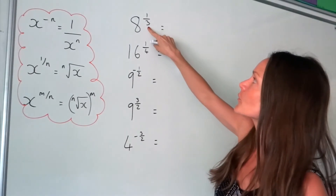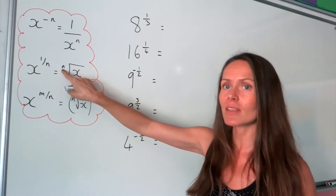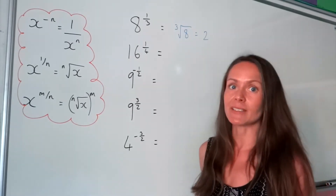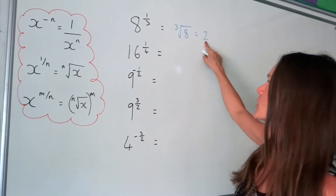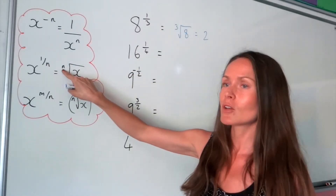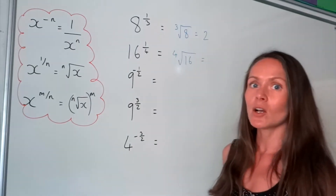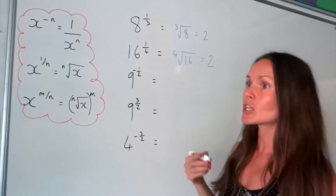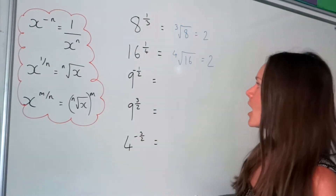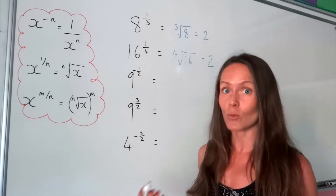In this next one, the denominator is three, so we're cube rooting the number 8. The cube root of 8 is 2, because 2 times 2 times 2 is 8. For the next one, we're working out the fourth root of 16 because the denominator is 4. That's also 2, because 2 to the power of 4 — 2 times 2 times 2 times 2 — is 16. With practice you'll get these quickly.